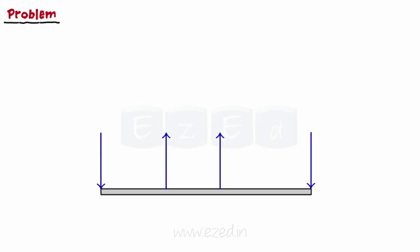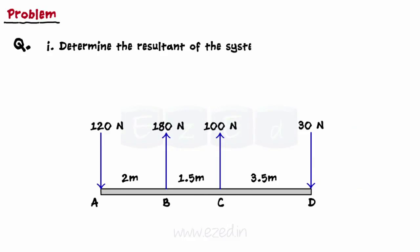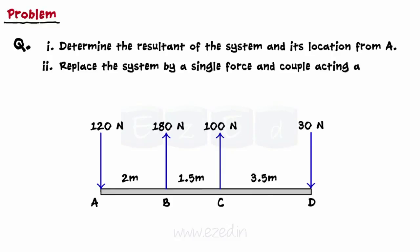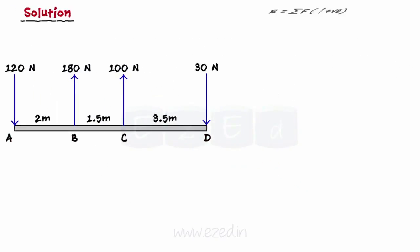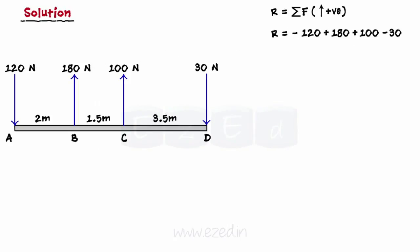Now, let's consider the following problem. Figure shows four parallel forces acting on a beam ABCD. Determine the resultant of the system and its location from A. Replace the system by a single force and couple acting at point B. Replace the system by a single force and couple acting at point D. This is a parallel system of four forces acting on the beam ABCD. Firstly, we have to find the resultant of the entire system. This is done by simply adding up all the forces using the sign convention as upwards positive. The resultant is found to be 130 N acting upwards.